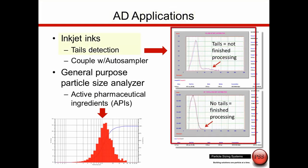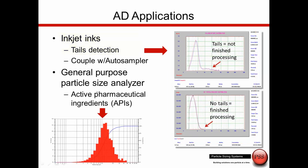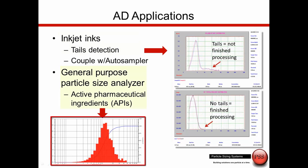Typical results from the AccuSizer AD include inkjet inks. In the upper right, an incompletely processed sample still has a few large particles that can cause performance problems and clog inkjet printer heads. In the lower right, after milling the pigment, there are no particles greater than 10 microns and the ink is suitable for the final product. Another application is as a general particle size analyzer, shown here for an active pharmaceutical ingredient — powdered API dispersed in liquid.